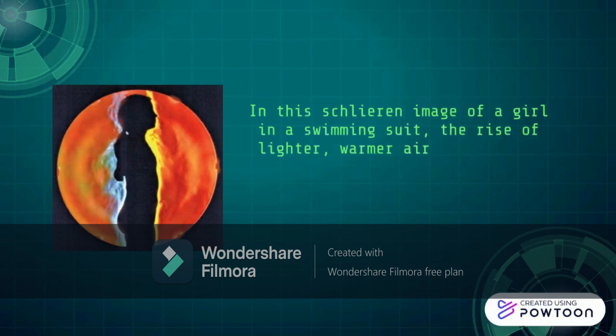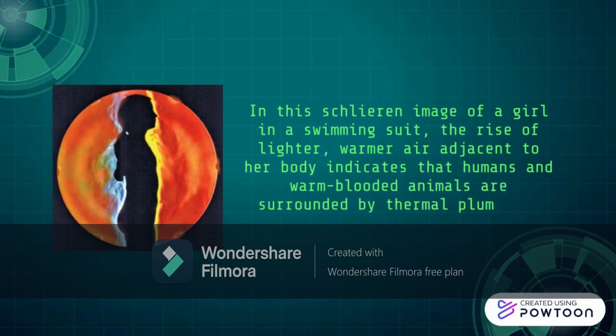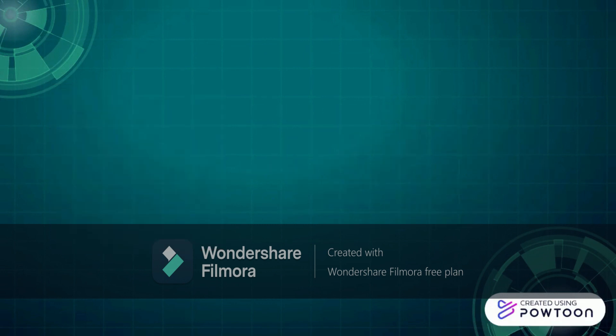In this schlieren image of a girl in a swimming suit, the rise of lighter, warmer air adjacent to her body indicates that humans and warm-blooded animals are surrounded by thermal plumes of rising warm air.